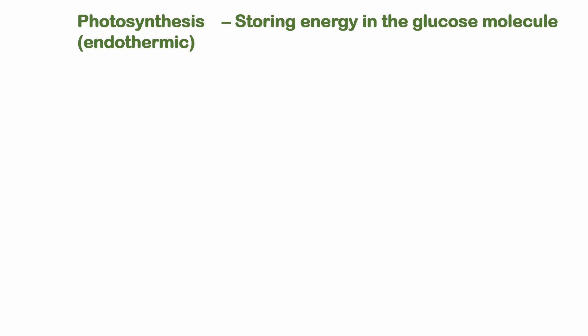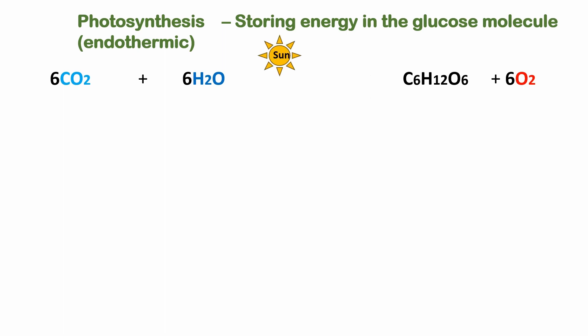We are using the process of photosynthesis. We can use the process of photosynthesis for the endothermic reaction. The endothermic reaction is used such that heat is absorbed. We can absorb light energy and carry out the process of photosynthesis.